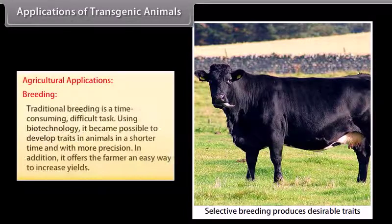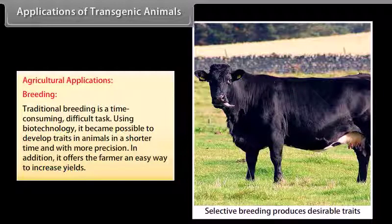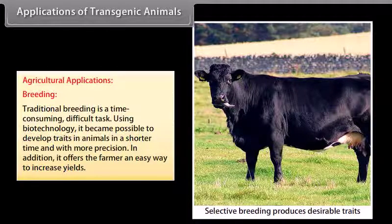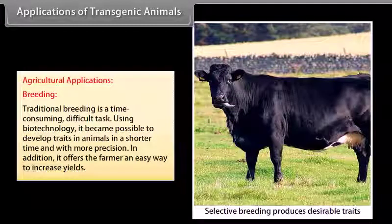Agricultural applications — Breeding. Traditional breeding is a time-consuming and difficult task. Using biotechnology, it became possible to develop traits in animals in a shorter time and with more precision. In addition, it offers the farmer an easy way to increase yields.